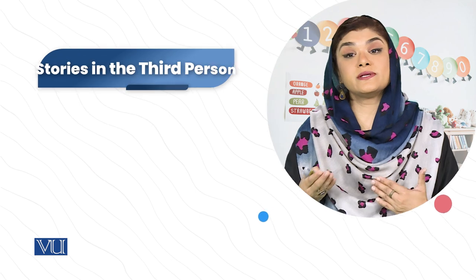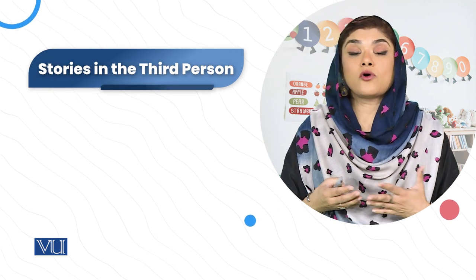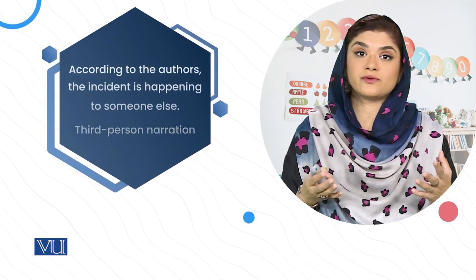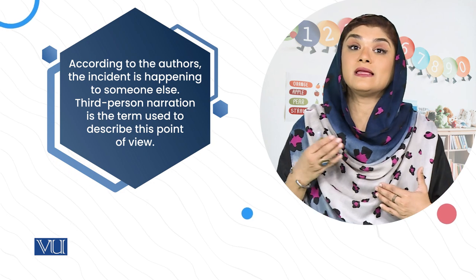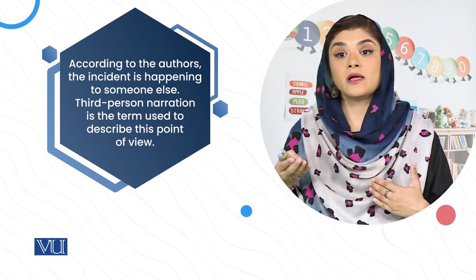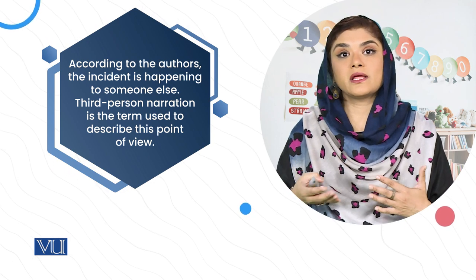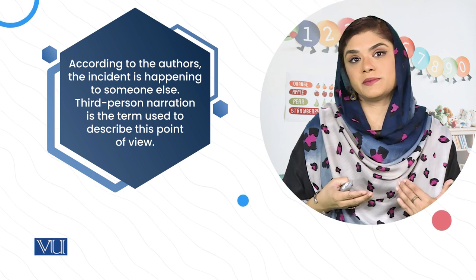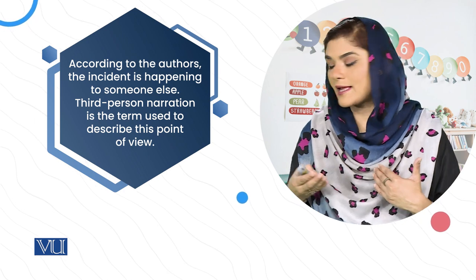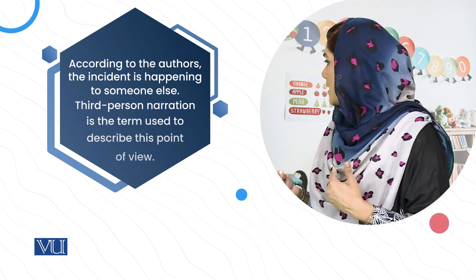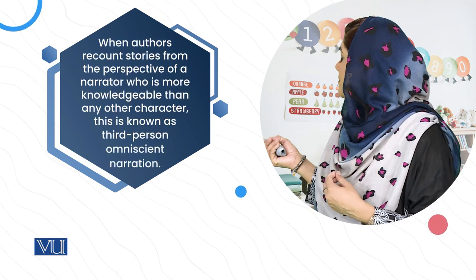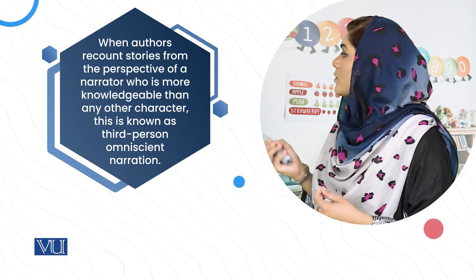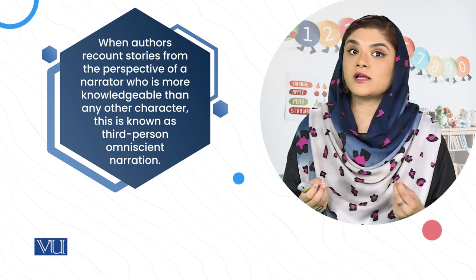The third person is the most common type of story. The writer or narrator speaks about characters in the story, and the incident follows a person. The narrator speaks about these stories many times.